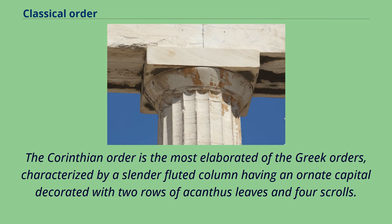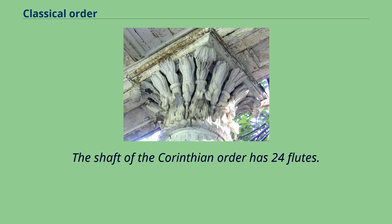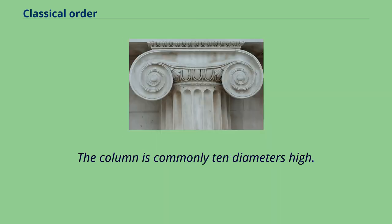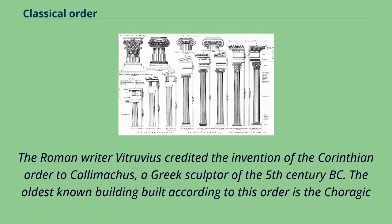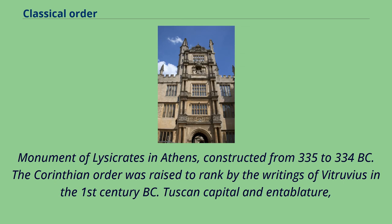The Corinthian order is the most elaborated of the Greek orders, characterized by a slender fluted column having an ornate capital decorated with two rows of acanthus leaves and four scrolls. The shaft has 24 flutes, and the column is commonly ten diameters high. The Roman writer Vitruvius credited the invention of the Corinthian order to Callimachus, a Greek sculptor of the 5th century BC. The oldest known building built according to this order is the Choragic Monument of Lysicrates in Athens, constructed from 335 to 334 BC.